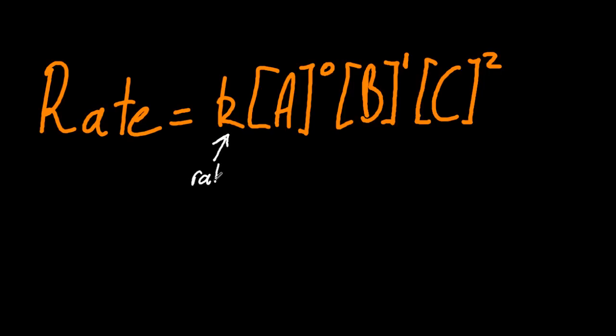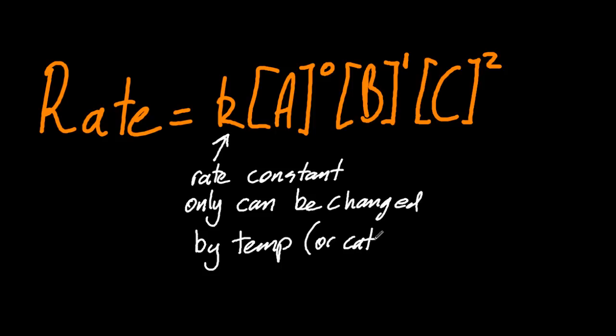So K is the so-called rate constant. You can only change that by changing the temperature or adding a catalyst, which the IB doesn't really need you to know. And the rate constant is specific to each different reaction. It's not like pi that's constant for everything. It's different for each reaction.